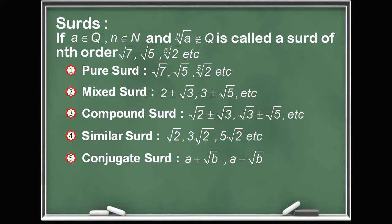Here a and b are rational numbers. If we add a + √b and a − √b, we get 2a, which is a rational number. Moreover, if we multiply them, we get a² − b. Since a and b are rational numbers, a² − b is also a rational number. Therefore, when you add as well as when you multiply these two surds, you get a rational number — we call such a pair conjugate surds.